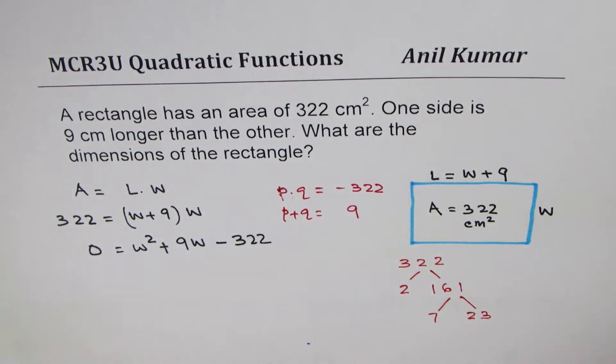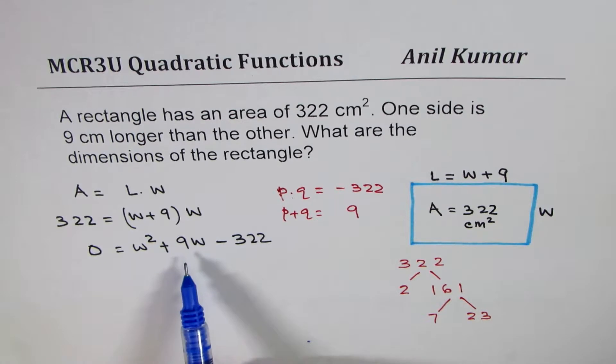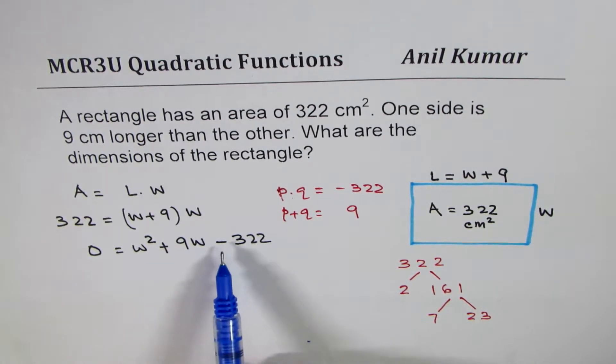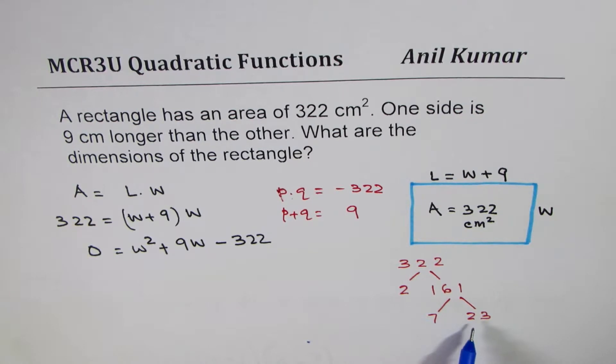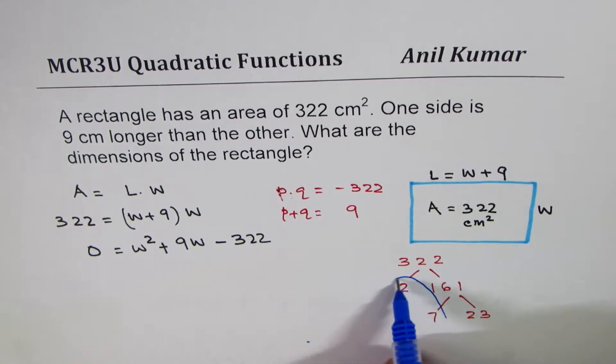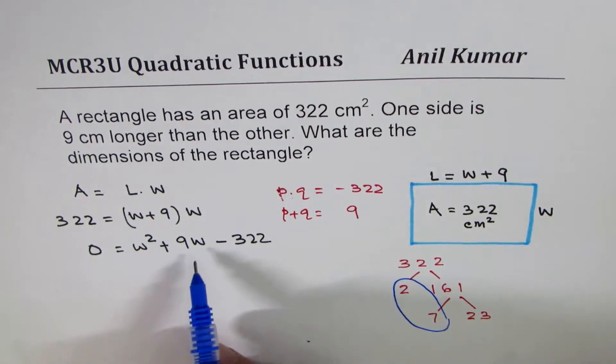These are very typical numbers so I kind of remember them. I hope you will also remember after this example. Now we need sum as 9, and since the product is negative one of them should be positive, the other one negative. So if I combine 7 and 2 I get 14.